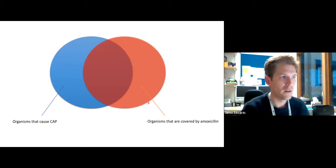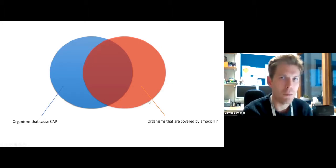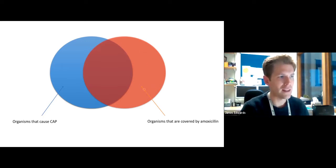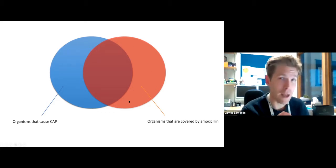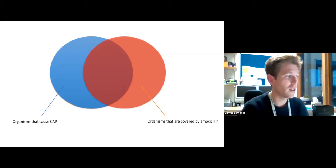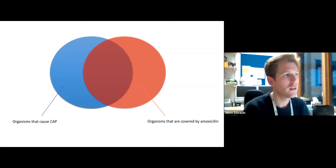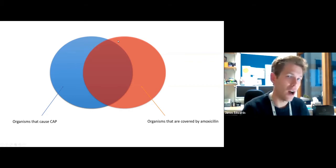In blue are organisms that cause community-associated pneumonia, and also organisms covered — i.e. killed — by amoxicillin. As you can see, the two don't overlap perfectly. When you prescribe amoxicillin based on guidelines, you'll also be killing bacteria unrelated to this child's infection, and potentially missing organisms that could be the cause. Based on the history and examination, you're making your best guess that amoxicillin is likely to cover the most likely organisms.